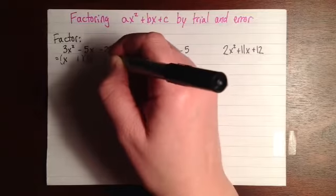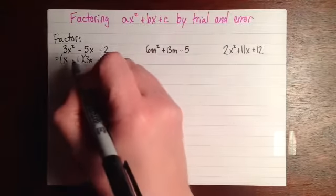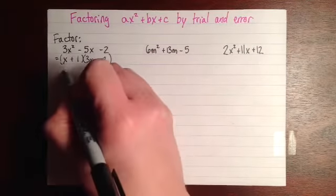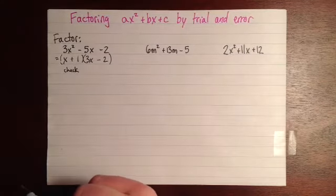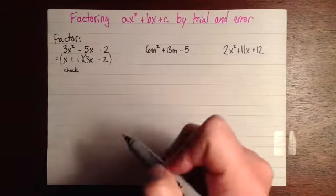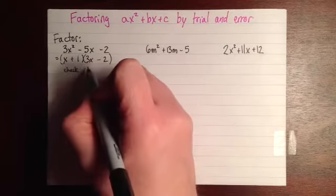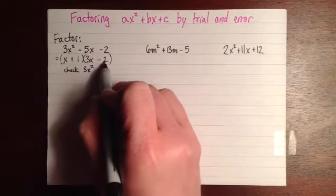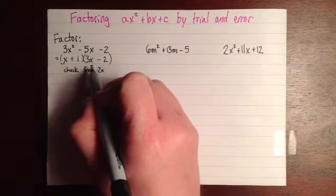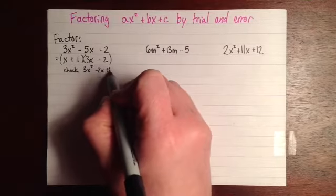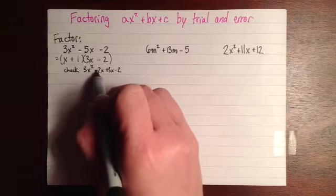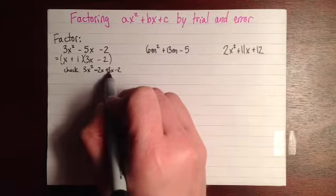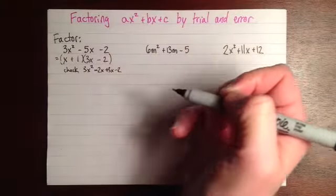So maybe I'll try a 1 here and a 2 here, and I'll try positive and negative. I would recommend you do this in pencil, but just to make sure it shows up on the screen, I'm going to do it in marker. So this gives us 3x squared minus 2x plus 3x minus 2. So this almost looks like it's right, but we've got minus 2x plus 3x, which is just plus 1x. So that's wrong.